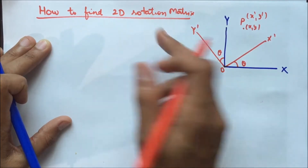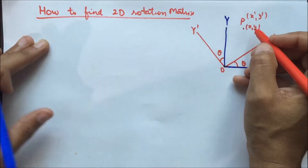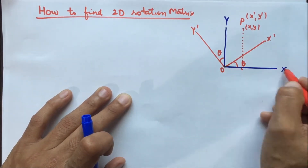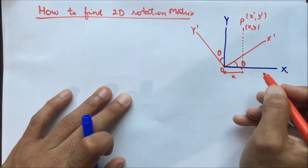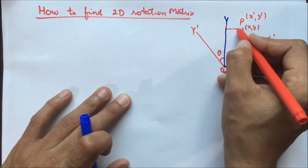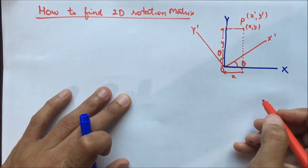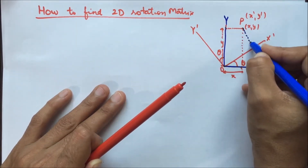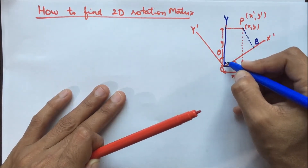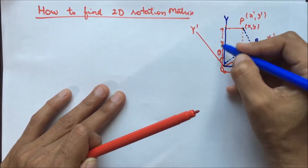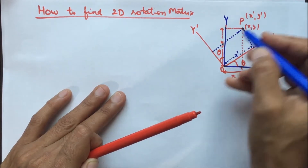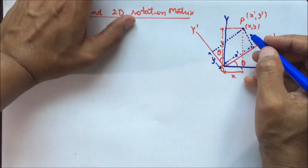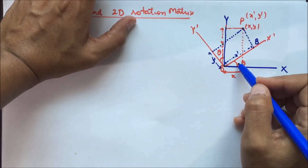To derive the 2D rotation matrix, we first find the coordinates x, y and x', y' from the figure. If we draw a perpendicular from point P on the x-axis, then we get lengths x and y. In the coordinate system x'-y', if we draw a perpendicular from point P on the line OX', suppose this point is B, then this whole length is x'. If we draw a perpendicular from P on OY', that length is y'.